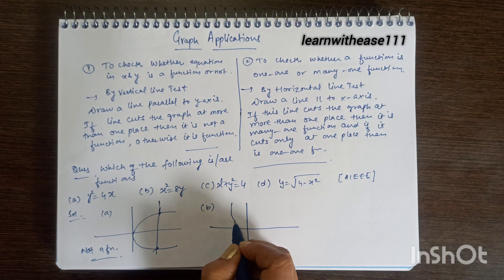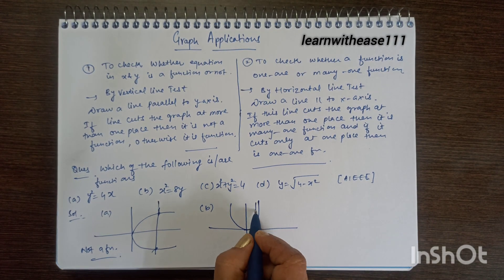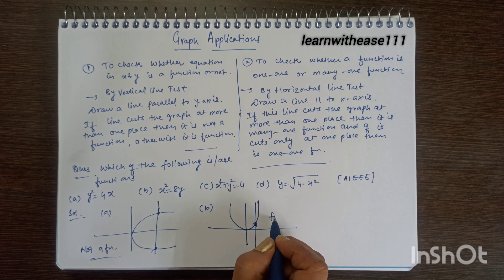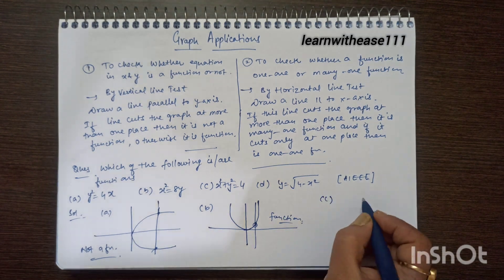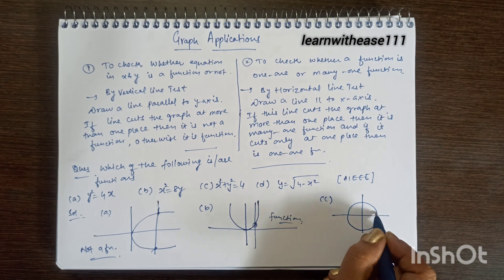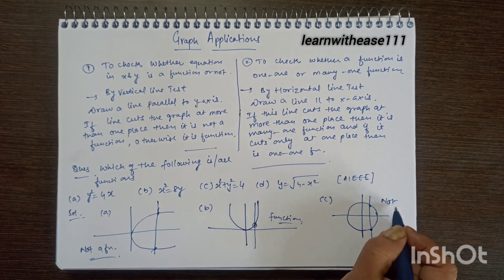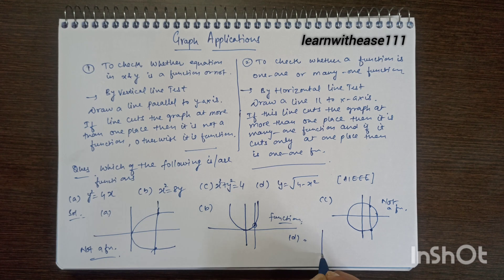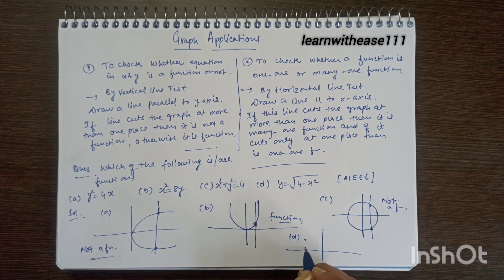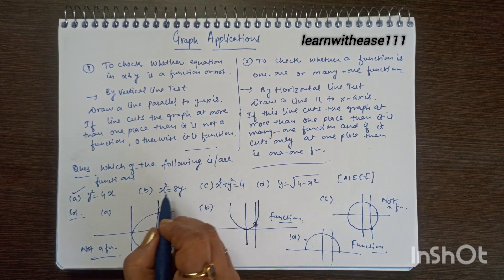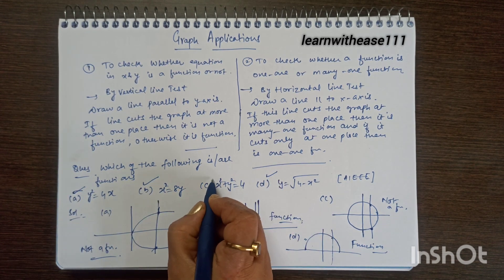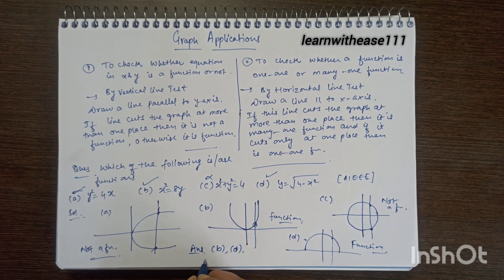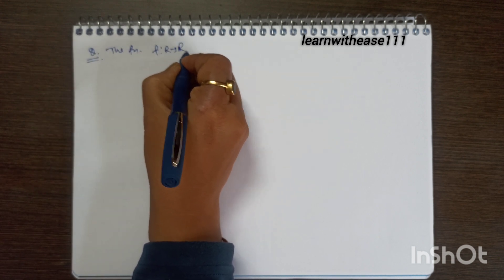The third option is a circle x² + y² = 4 with radius 2 — a vertical line cuts it at more than one place, so it is not a function. The fourth option is a semicircle bounded to positive values of y only — a vertical line cuts it at one place, so it is a function. Therefore, options B and D are functions.